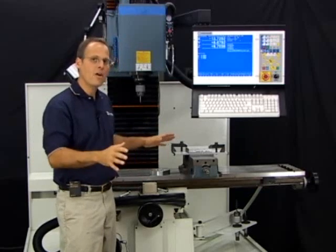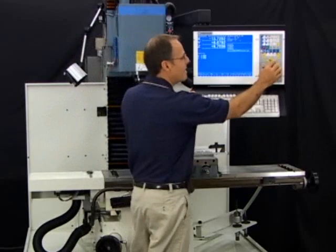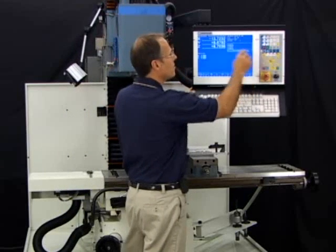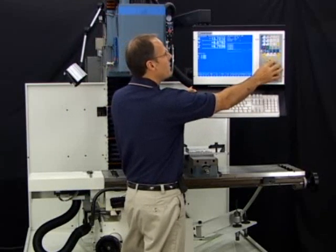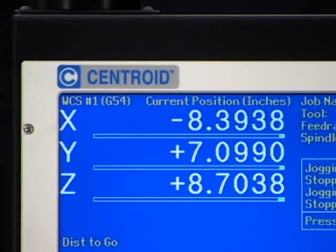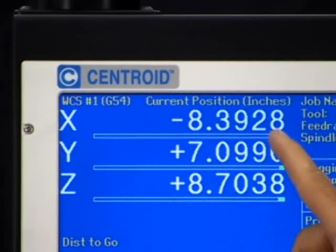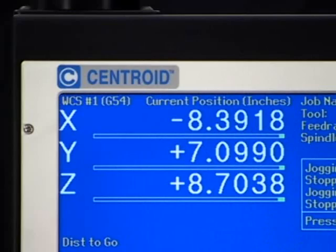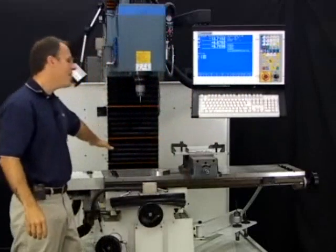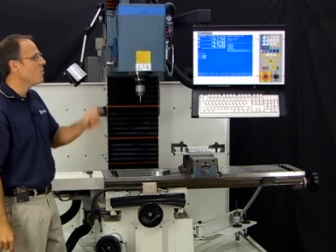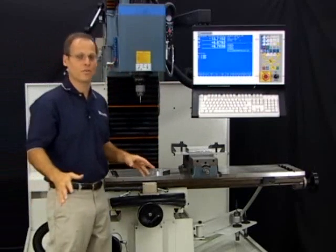Right now when we're done homing, if I hit the X positive button, you'll notice that every time I hit it, that axis is jogging over by the times ten amount, which is one thousandth of an inch. I'd like to get my vise over here in the middle of the travel, so I want to switch over to continuous mode.